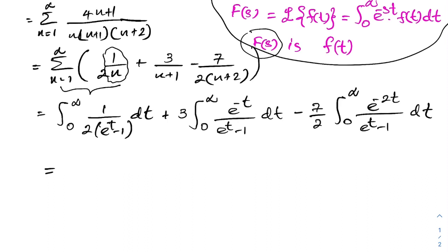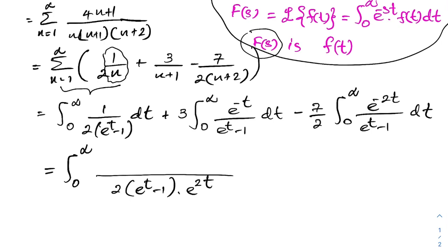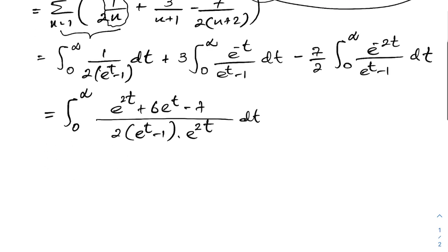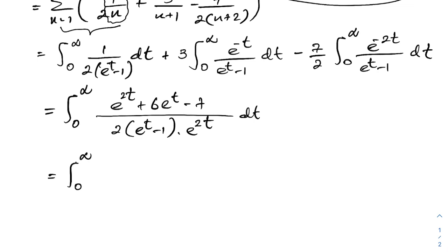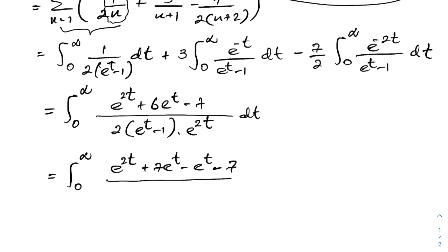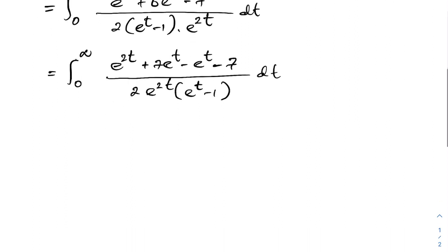Now we combine into one integral with common denominator 2 times (e^t minus 1) times e^(2t). The numerator becomes e^(2t) plus 6 times e^t minus 7. We can factor this as: e^(2t) plus 7 times e^t minus e^t minus 7, which factors as minus 7 over 2 times e^(2t) times (e^t minus 1).